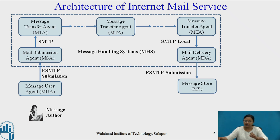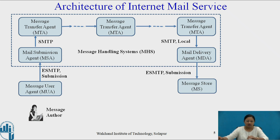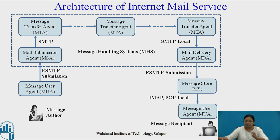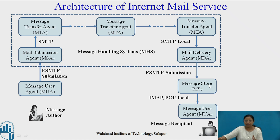The mail delivery agent transfers the message to the message store. A message user agent can employ a long-term message store. The message store can be located on a remote server or on the same machine as the MUA. Typically, an MUA retrieves the message from the remote server using IMAP — internet message access protocol — or POP, post office protocol. The destination MUA will take the message from the message store, which may be located at a remote or local server, whenever the recipient is available.